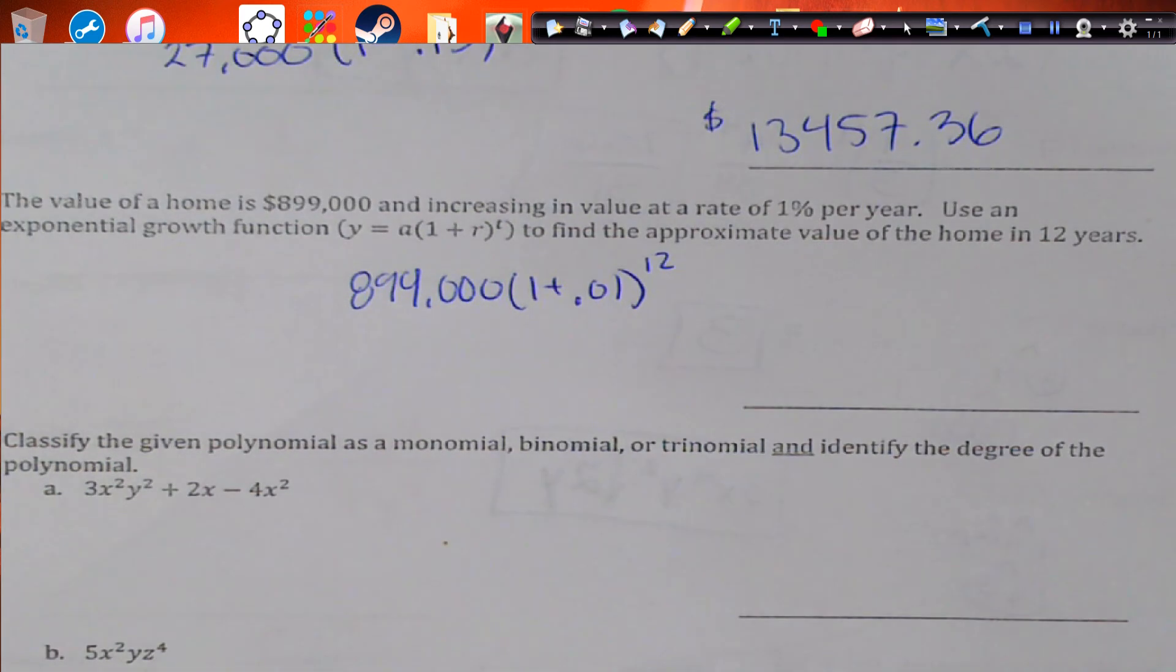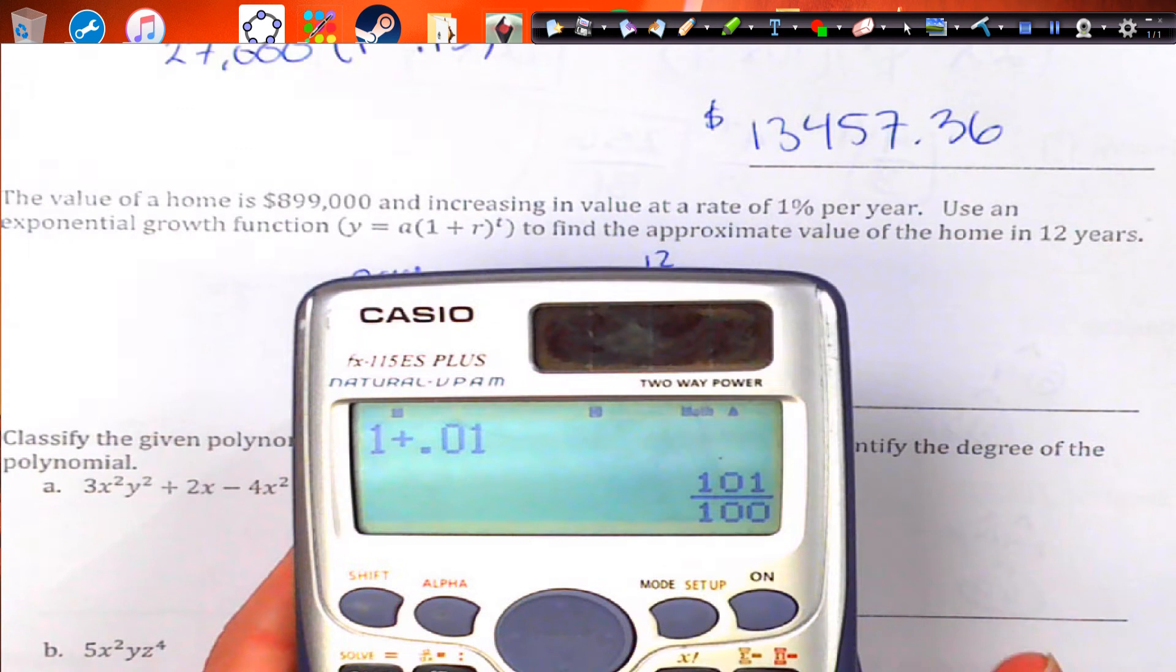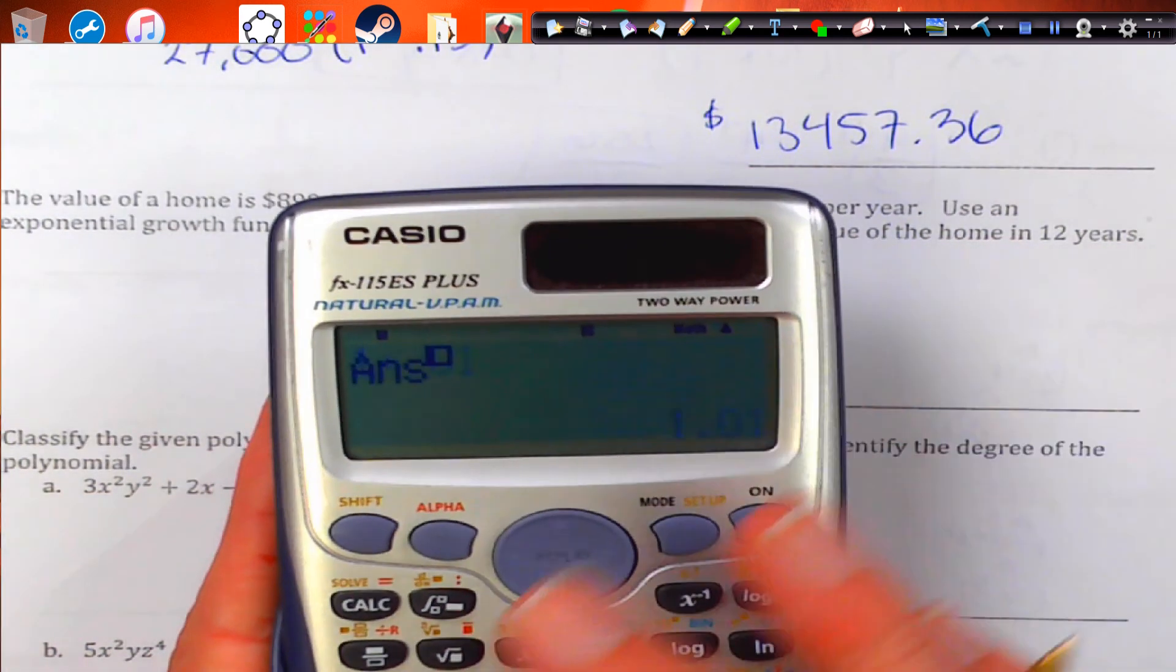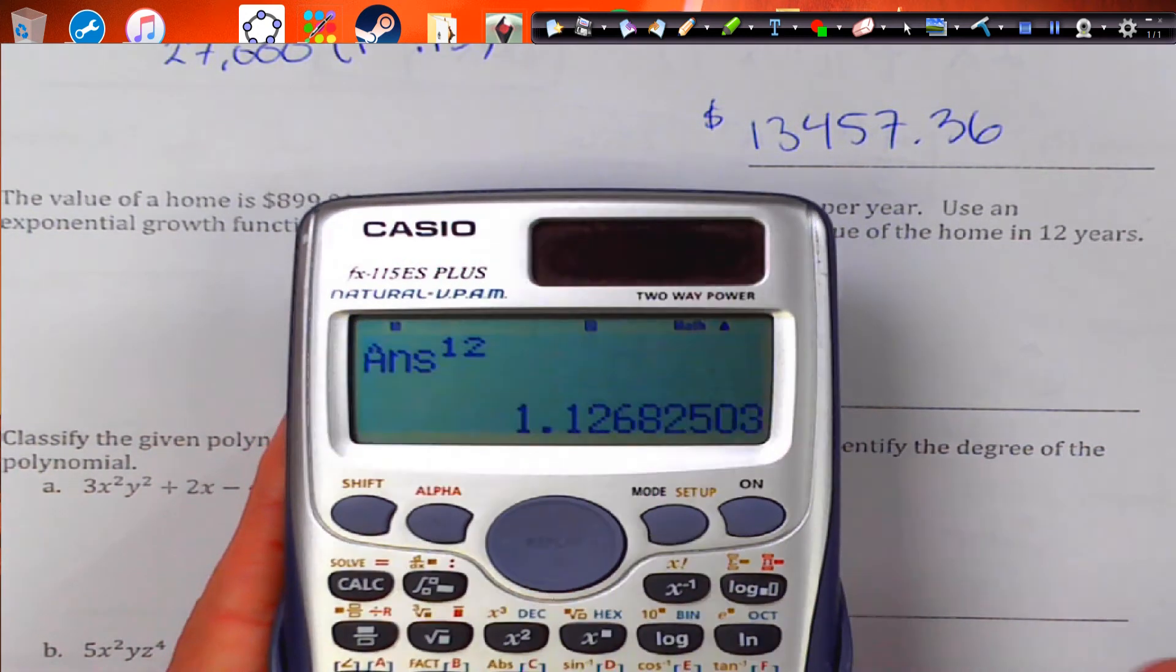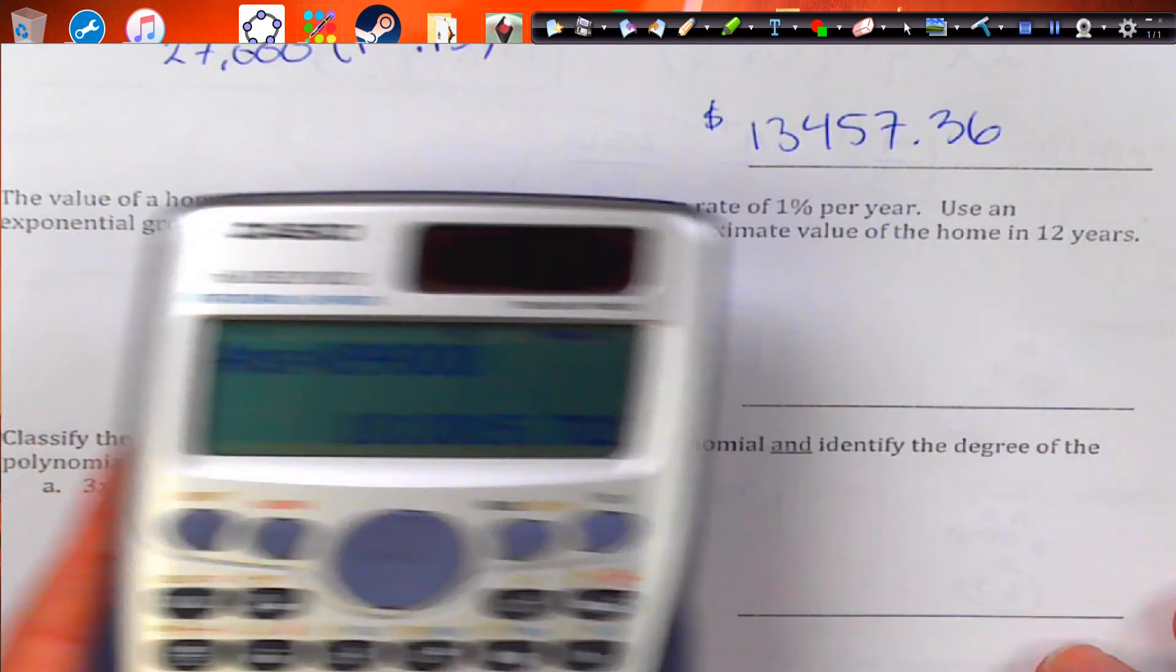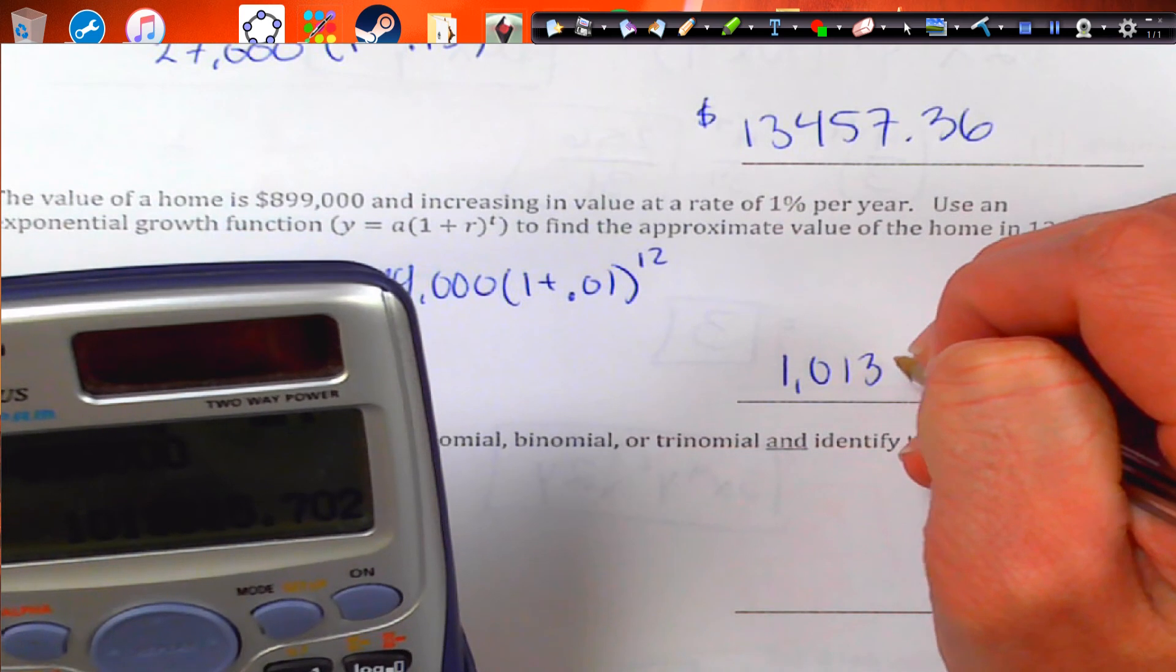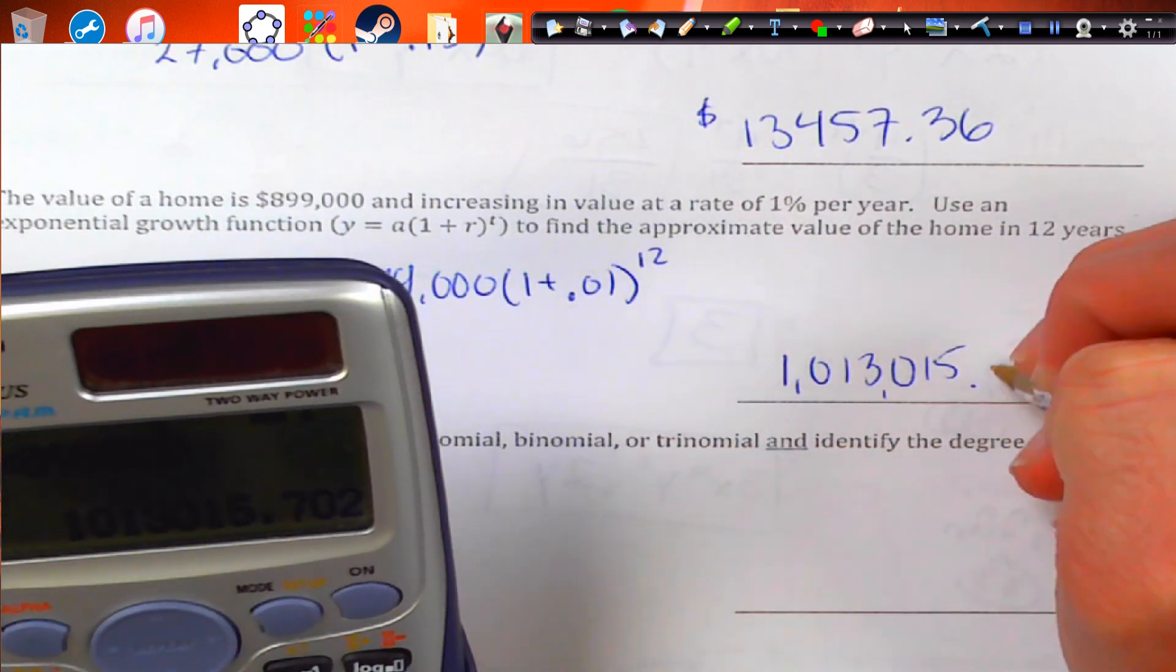So we're going to get 1 plus 0.01. We start there, which gives us 1.01. Then we're going to raise it to the 12th power. And we get this number. And then we're going to multiply that by our home value. And our new home value is going to be $1,013,015.70.